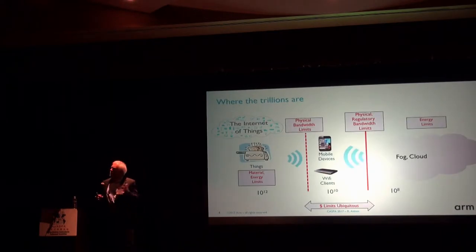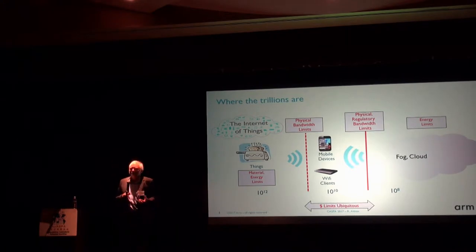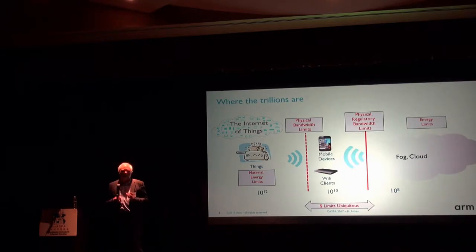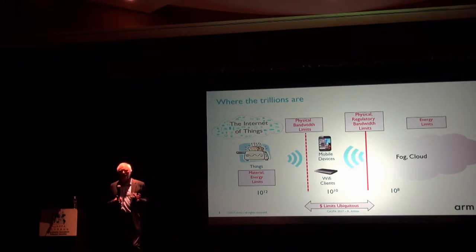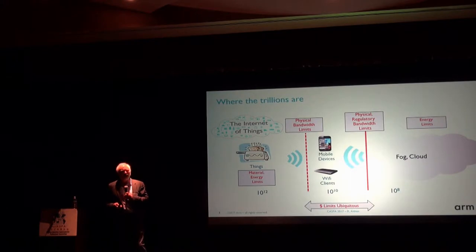Where are the trillions? When you look at where stuff is, most of it is going to be right out at the edge — smart toasters or smart sensors. It's not all home automation. When you think of a factory floor or a semiconductor fab, there are lots of machines generating huge amounts of data. That part of the edge is where the trillion-ish volume is, and then it works its way back into the cloud, a few orders of magnitude below that, but still very large numbers.